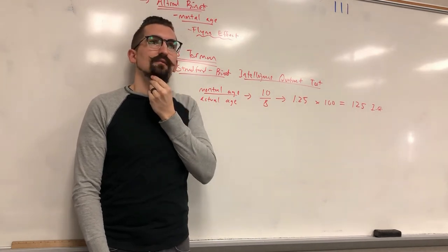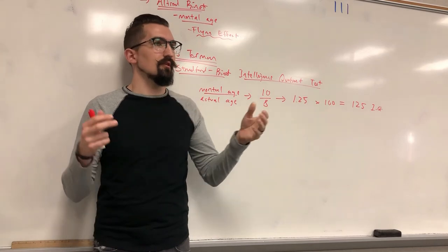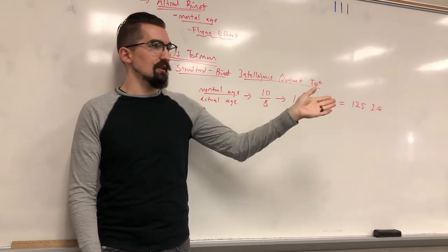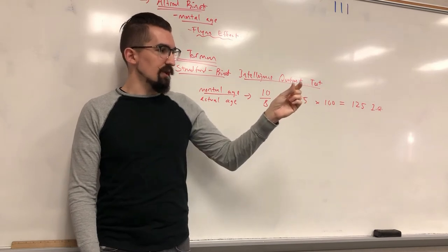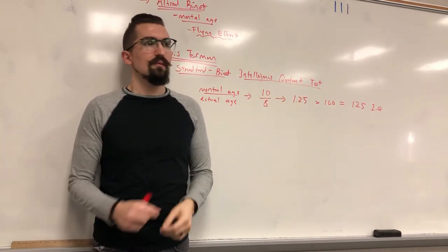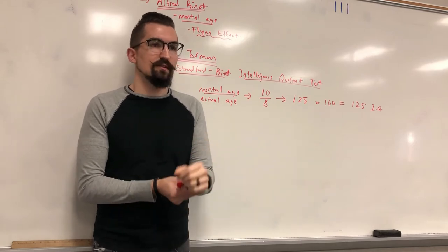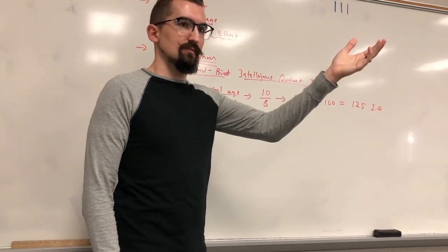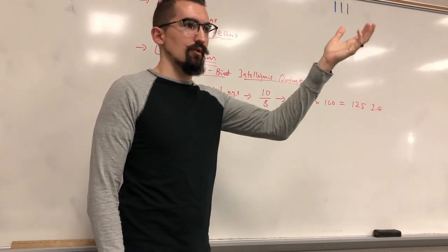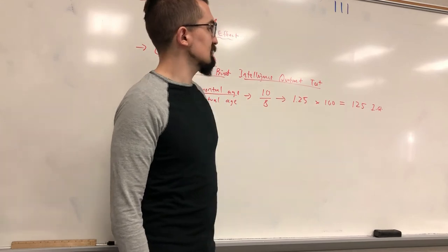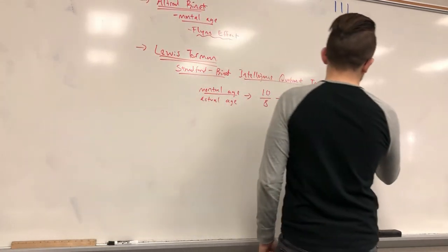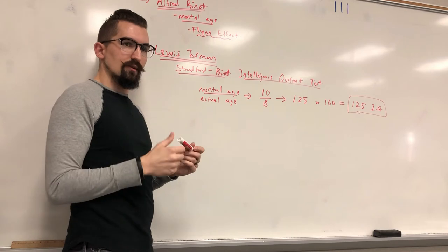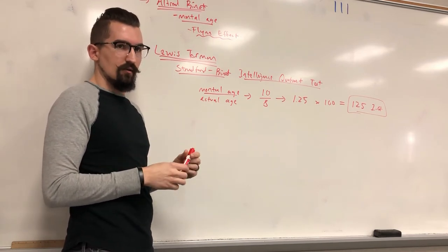A score of 125 means considerably above average — roughly the top 15% or so. This formula has been modified somewhat since Terman's time, but it's the basis for the modern IQ test. Scores tend to stabilize by adolescence, after puberty, so junior high and high school scores are the most reliable long-term indicators of adult intelligence.